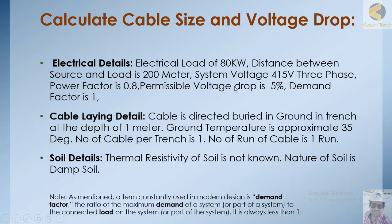The length of the cable is 200 meters, system voltage is 450 volts three-phase, power factor is 0.8. As seen in previous lectures, a cable has two components — resistance and reactance — and depending upon power factor, voltage drop appears, so we use power factor here. The permissible voltage drop is 5% and demand factor is 1.